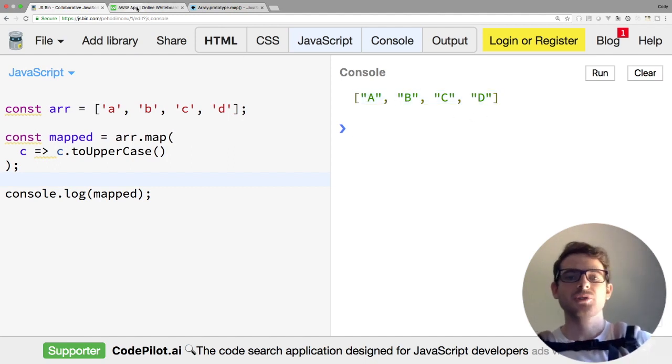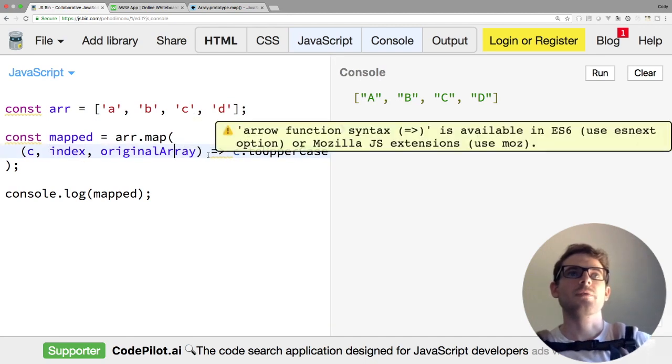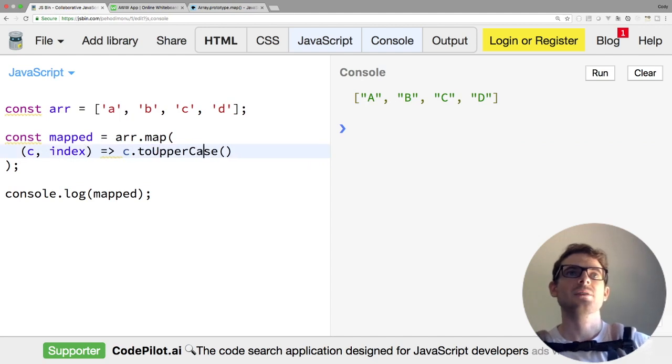So similar to the filter function, your callback can include additional arguments. The next argument in your callback would be the index, and then the third argument would be your original array, if for whatever reason you wanted to use these. So let's say, for example, we wanted to append the index to our uppercase letter. We could do something like this. And if I run this, we should get A0, B1, C2, and D3.